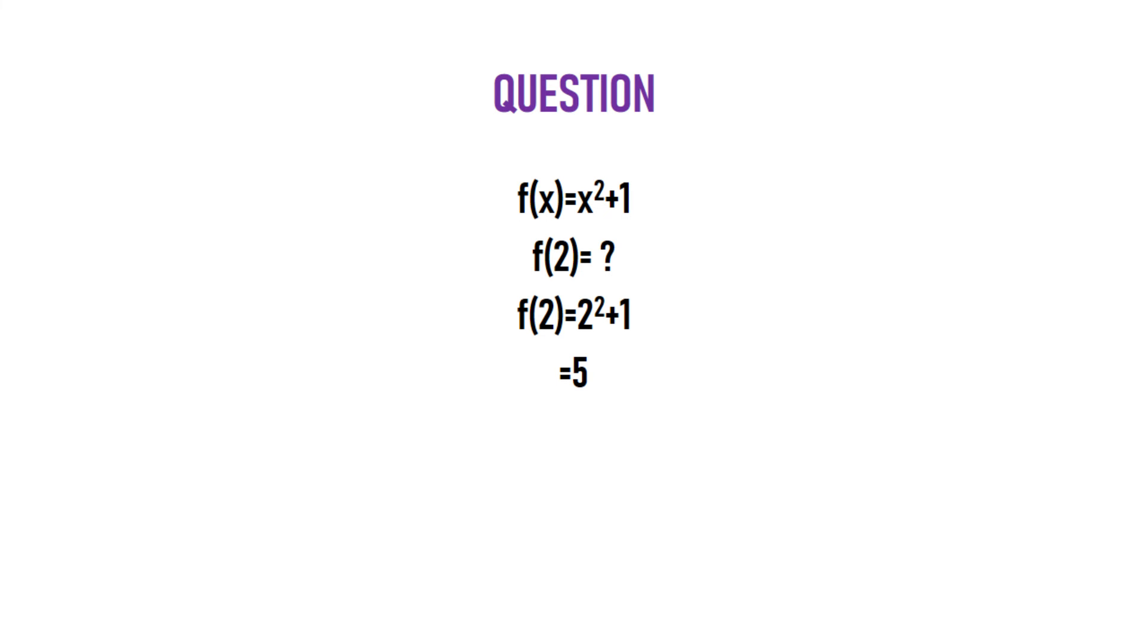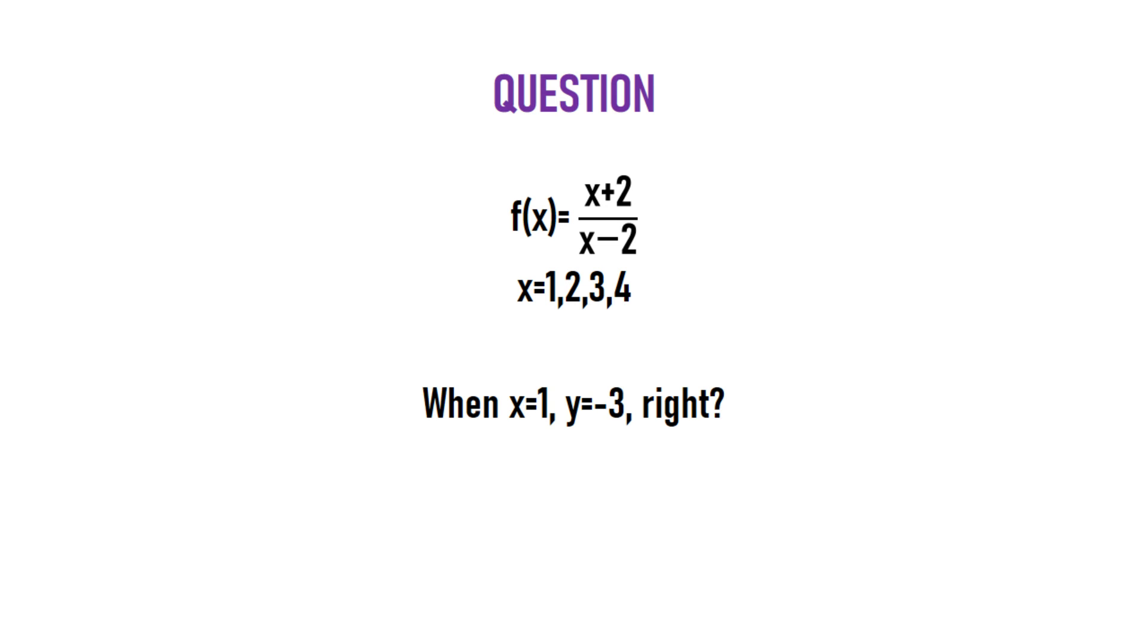Let's take another example. Say f(x) = (x+2)/(x-2) with domain 1, 2, 3, 4. When x is 1, y is -3. But when x is 2, y becomes undefined because you get zero as the denominator. We can't get the value for the function when x is 2 - the function is undefined.